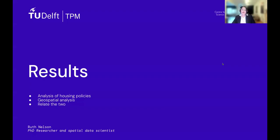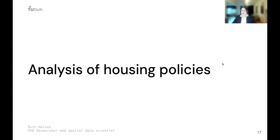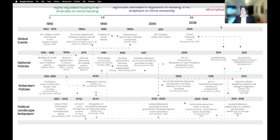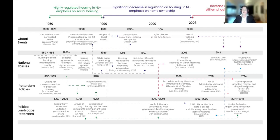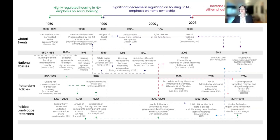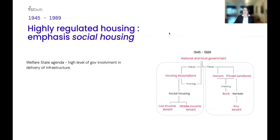Moving on to the results, beginning with the analysis of housing policies. We constructed a multi-scalar timeline mapping different policies and large events at global, national, and local scales, including the political situation in Rotterdam. We identified three phases: highly regulated housing with an emphasis on social housing; a significant decrease in regulation with an emphasis on home ownership; and then an increase in regulation still with an emphasis on home ownership.